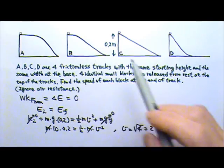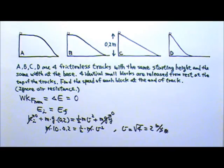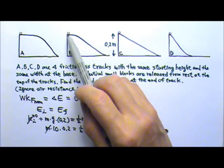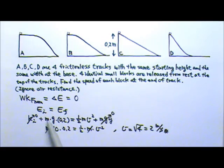Now what about part B? Would anything be different? It would still be the same initial Mgy. At the bottom of the track, only kinetic energy. So we have the same final speed, 2 meters per second for all four tracks, A, B, C, D.